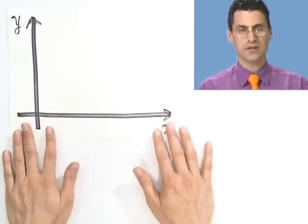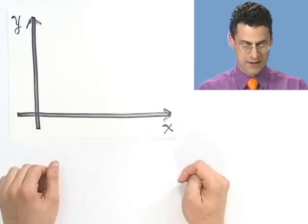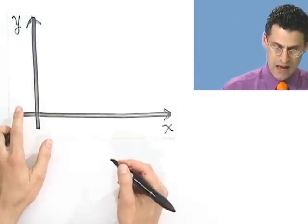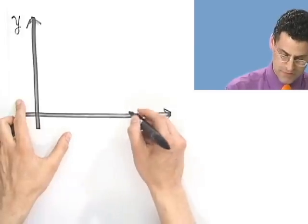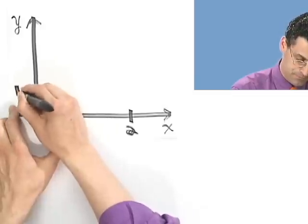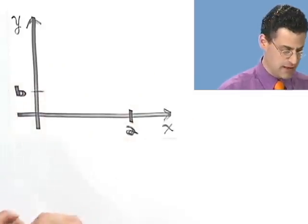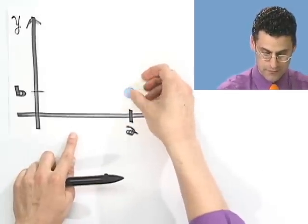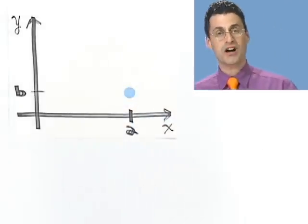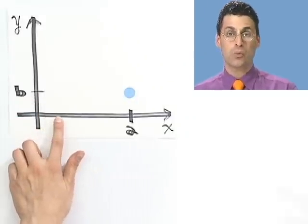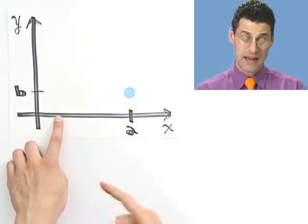So first of all, what does it mean for things to be inverses visually? Well, let's contemplate that for a second. Suppose I had a point here, let's say a comma b. And let's suppose it's way out here. So here's a and here's b. So a comma b would be right here. Now, if I wanted to undo that, what would that mean? It would mean that if I now plug in b, what should it spit out? It should spit out a.